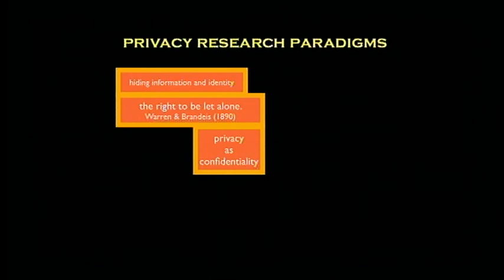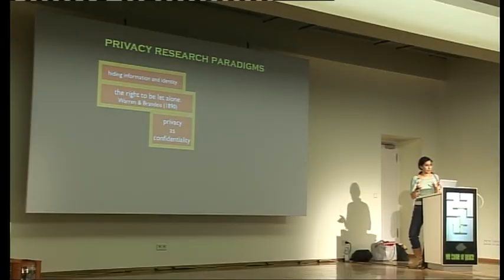The most dominant paradigm I find in privacy is privacy as confidentiality. The definition taken by people who work on this is the right to be let alone, as defined by Warren and Brandeis in 1890. The basic principle these solutions try to achieve is to hide information, because the idea is: if you can keep your data to yourself, you have your privacy. If you reveal it, your privacy is lost. The basic idea is to either hide information or data, or hide identity — make it unlinkable to yourself.